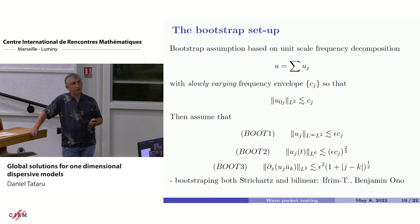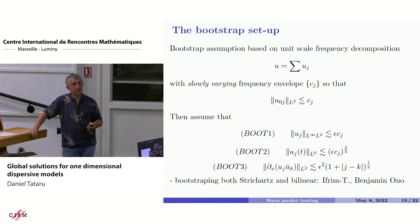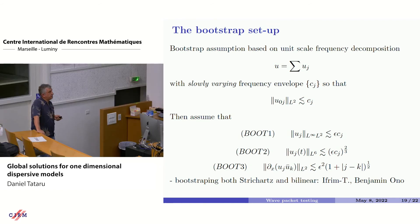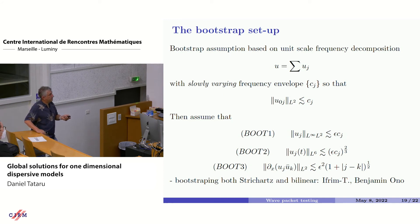Then you do a bootstrap argument, which is a little bit complex because you don't just bootstrap the size of the solutions — you bootstrap Strichartz norms of these localized pieces and also bootstrap the constants from the bilinear estimates. This idea of bootstrapping both Strichartz and bilinear estimates we had earlier from a paper on the Benjamin-Ono equation. You put a large constant in front of each estimate and then want to prove with better constants.